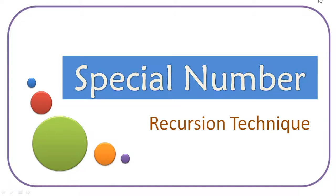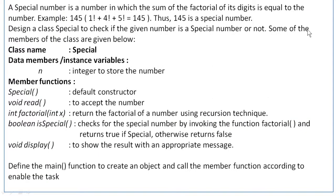Hello everyone. In this video we are going to see a program to accept a number and check whether the number is a special number or not by using a recursion technique. A special number is a number in which the sum of the factorial of its digits is equal to the number.